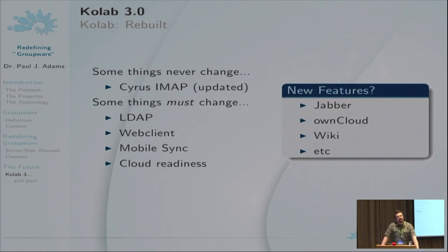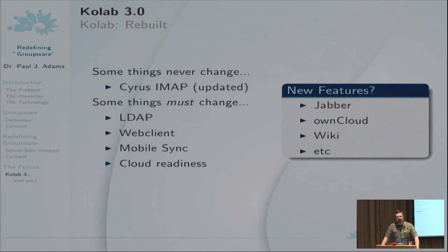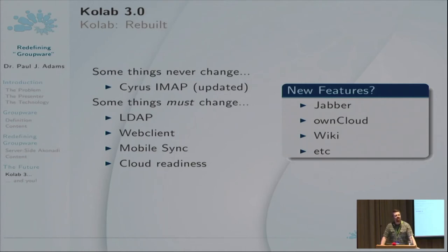This is where we're heading with CoLab 3 — the next major release of CoLab, due out sometime in the coming months. Over the lifecycle of CoLab 3 as a whole, not just 3.0, we really plan to make CoLab a technology that allows you to protect your data and your life and your information. As part of this, a few things we're not changing: the CoLab storage will continue to be Cyrus IMAP — we use Cyrus basically as a NoSQL storage. All your PIM data is effectively just an attachment to an email, and we're going to continue to do this.